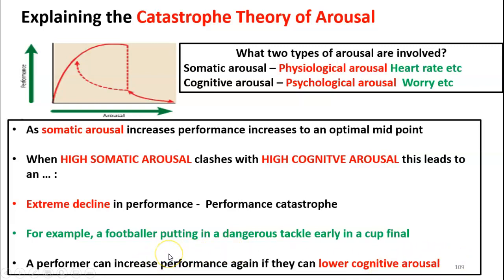For the exam, you have to make sure you include that high somatic arousal clashes with high cognitive arousal — both of those elements must be in your answer or you cannot get marks on this question. This theory is the shortest in terms of length but requires technical precision to get right. We'll look at the evaluation points in the lesson. Thank you.